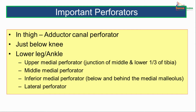The important perforator veins: in the thigh, the adductor canal perforator or Hunterian perforator. Just below the knee, there are perforators at the lower leg and ankle — the upper medial perforator, which lies at the junction of the middle and lower one-third of the tibia; the middle medial perforator, which lies midway between the upper and inferior medial perforators; and at the lower leg, a lateral or fibular perforator.